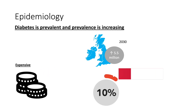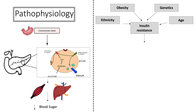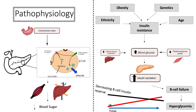Diabetes is extremely expensive — around 10% of the NHS's annual budget is spent on treating diabetes alone. Usually, when your blood sugar levels rise, this is detected by pancreatic beta cells which release insulin. However, type 2 diabetes is characterised by progressive insulin resistance. Factors influencing this include ethnicity — particularly if you're Afro-Caribbean or South Asian — obesity, genetics, and increasing age. Insulin resistance leads to increased hepatic glucose output, but also reduced uptake of glucose by peripheral tissues.